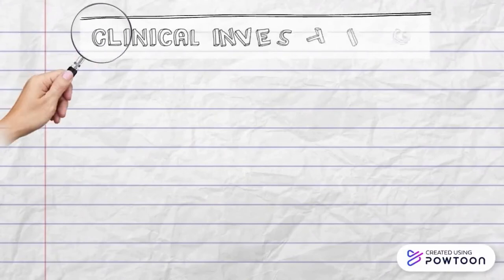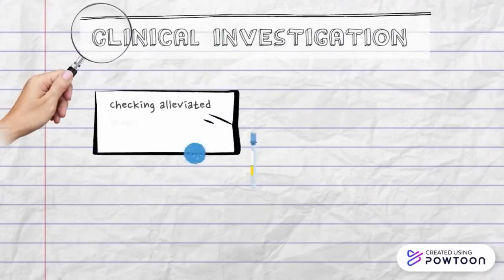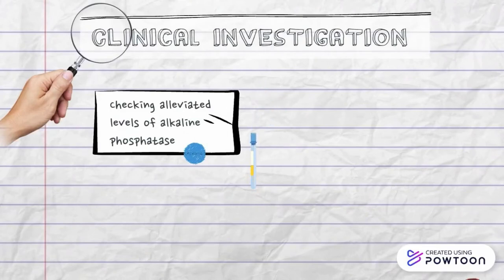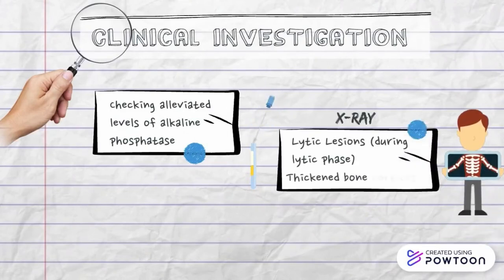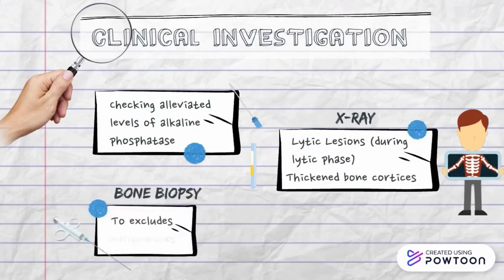Clinical investigations include: first, checking for elevated levels of alkaline phosphatase; second, X-ray to scan for lytic lesions during the lytic phase or thickened bone cortices; and third, bone biopsy to exclude malignancy.